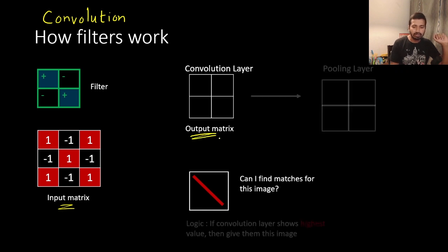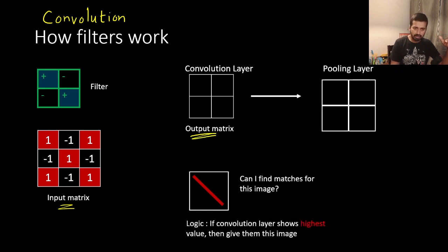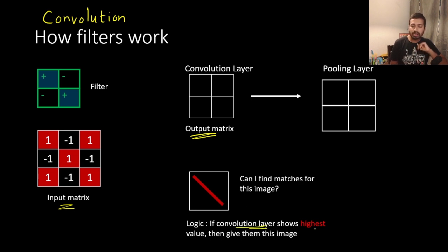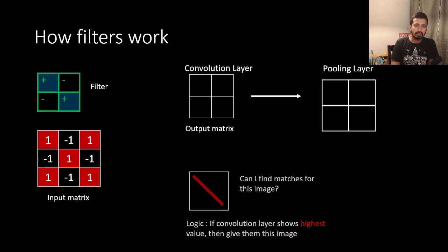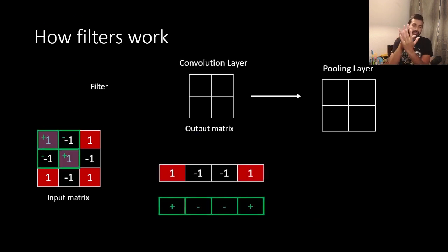In this step, let's do the pooling layer. If the convolution layer shows the highest value, then we can match it. So that is the logic behind it. First, we have to impose a filter in the matrix.